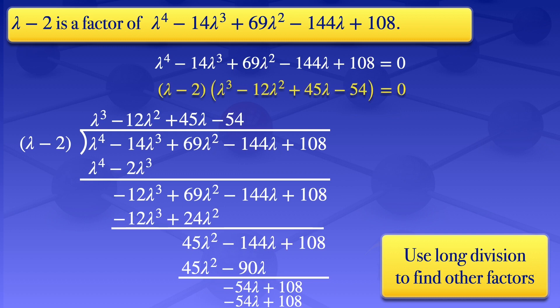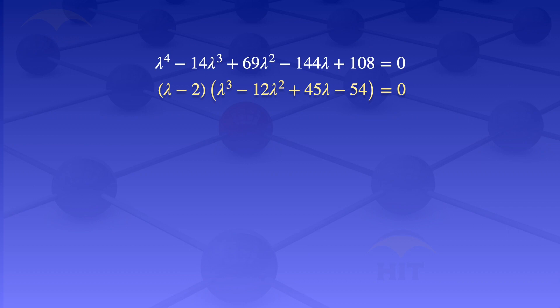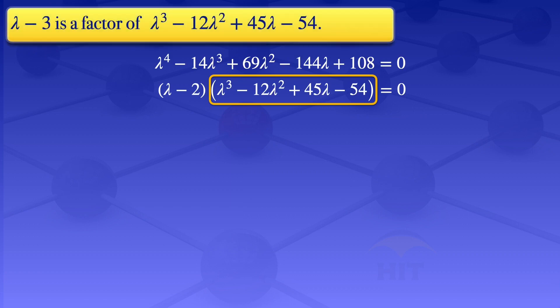Our equation becomes (λ - 2)(λ³ - 12λ² + 45λ - 54) = 0. We now look at the cubic λ³ - 12λ² + 45λ - 54 and try to find factors by trial and error. We find that (λ - 3) is a factor of λ³ - 12λ² + 45λ - 54.